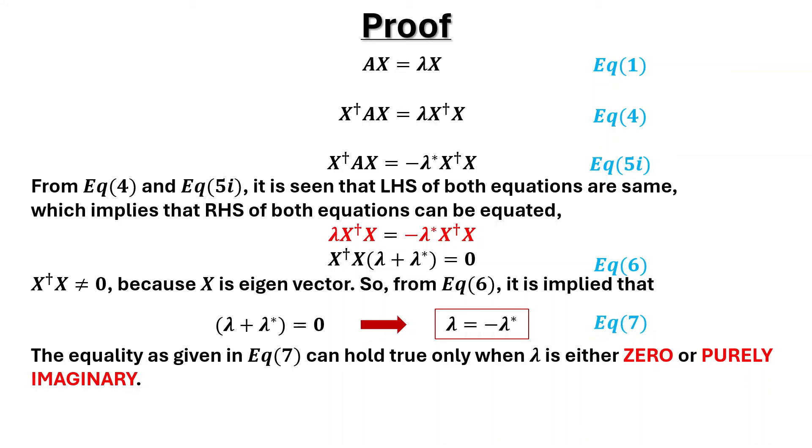The equality as given in equation 7 can hold true only when lambda is either zero or purely imaginary. So skew Hermitian matrices have either zero or purely imaginary eigenvalues.